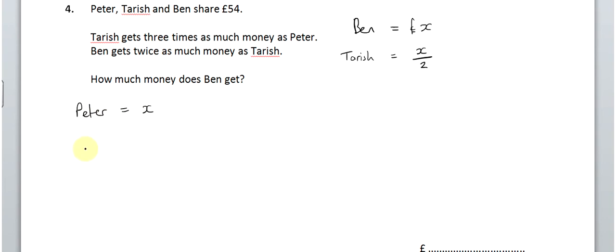So, if Peter gets X, Tarish gets three X. Because he gets three times as much money as Peter, doesn't he? Now, Ben, in that case, gets twice as much money as Tarish. He gets two of this. He gets 6X. Now, that's a lot nicer than doing it with the fractions. We could get the same answer this way, but this is much nicer. Now, if we add them all up, we get 6 and 3, which makes 9. We get 10X. And, we know that the total money is 54. And, then we can divide by 10. So, X is equal to 5.4, which tells us how much Peter gets.